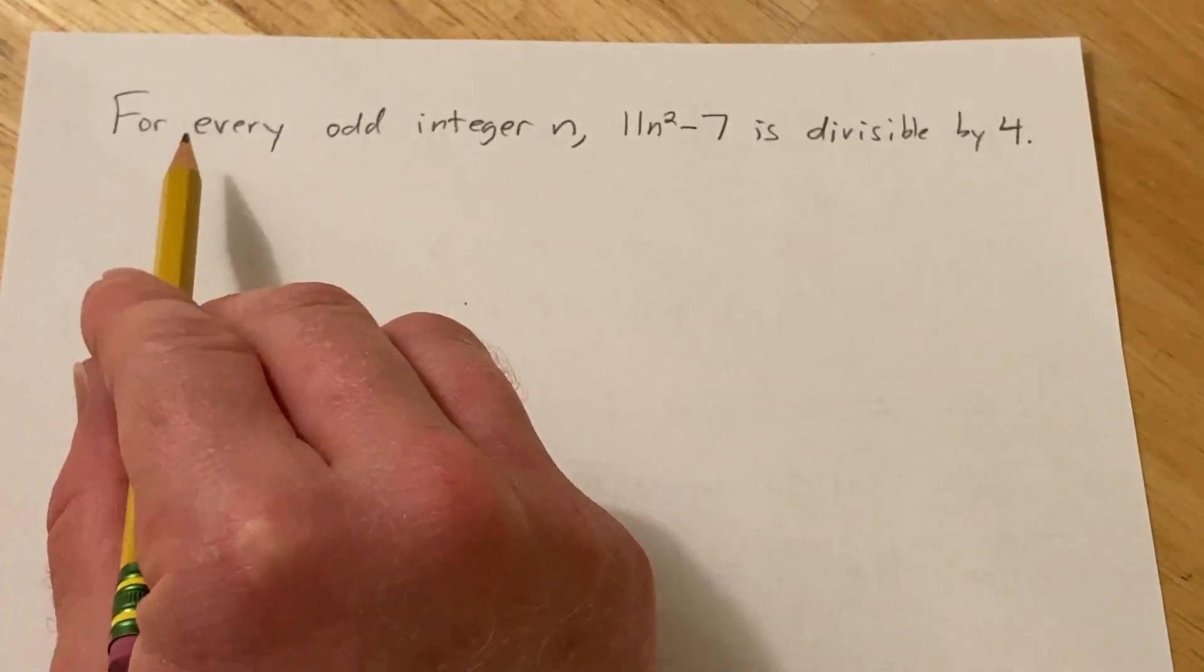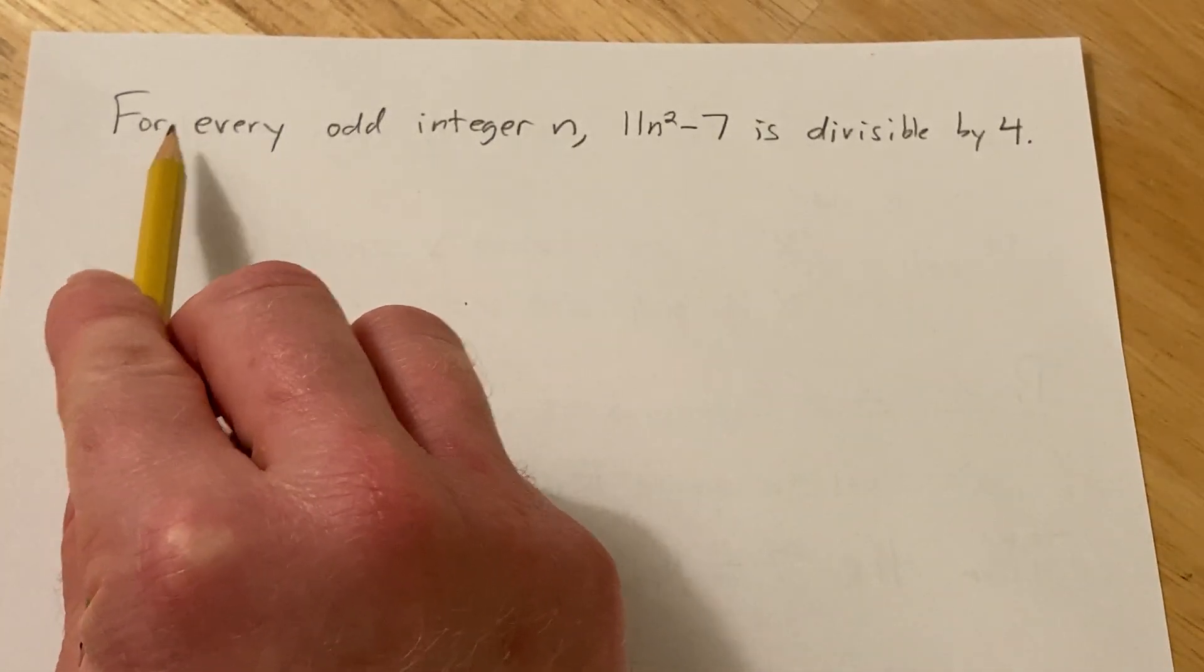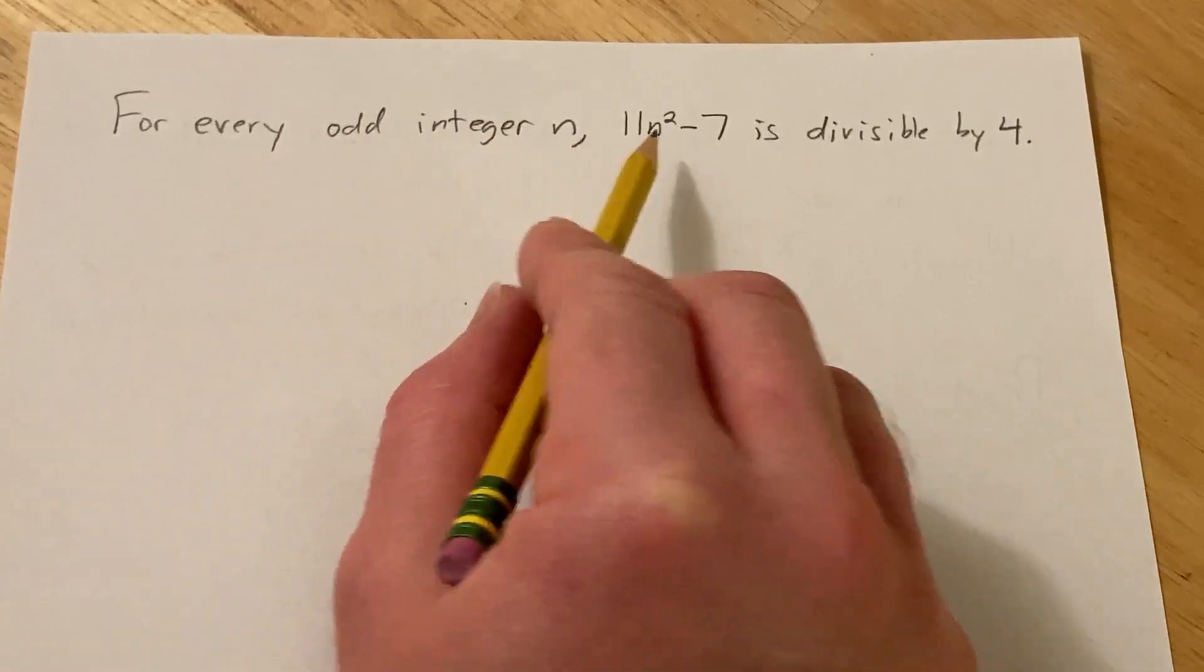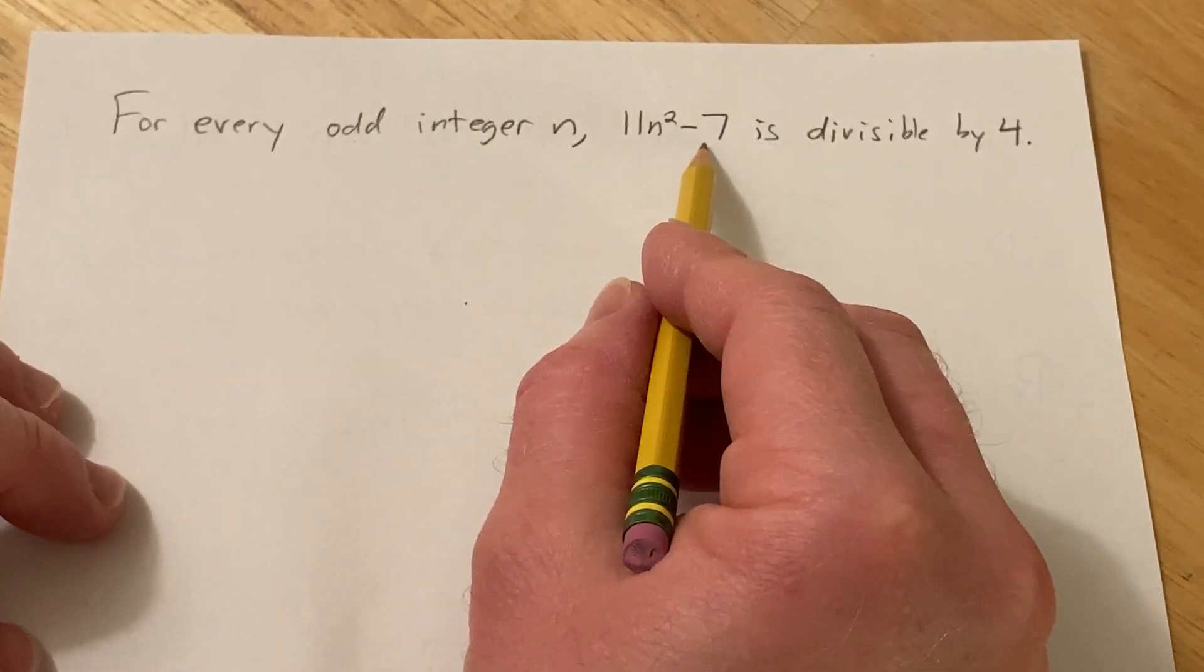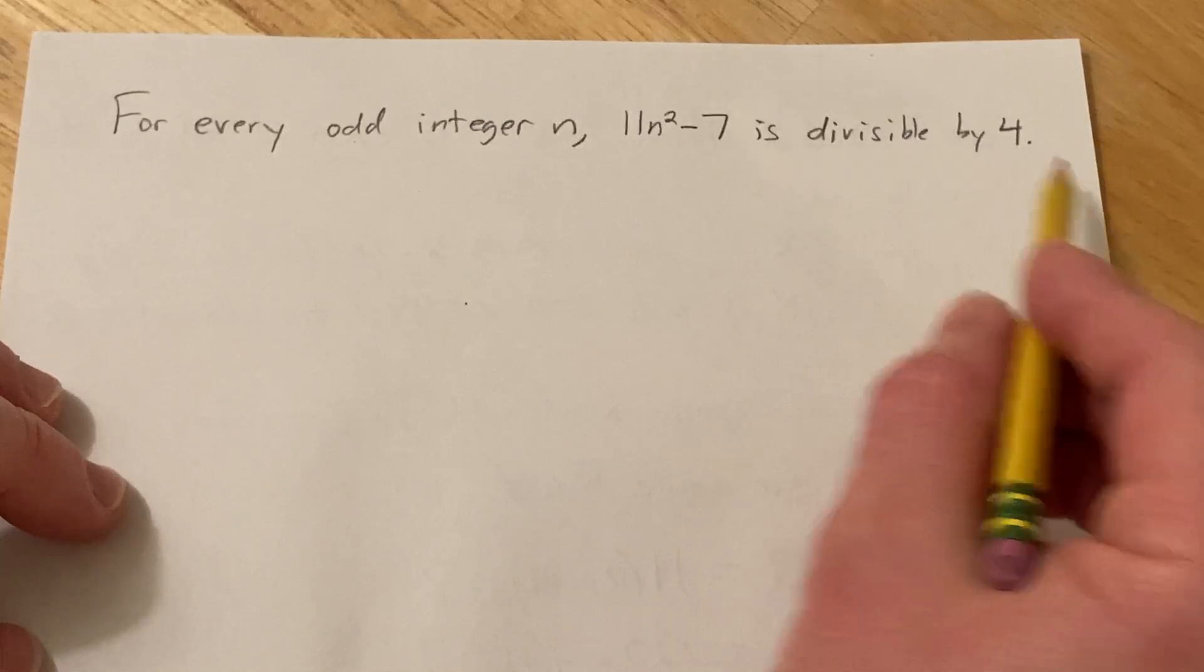Hi, in this video we're going to do a proof. We're going to prove that for every odd integer n, the integer 11n² - 7 is divisible by 4.